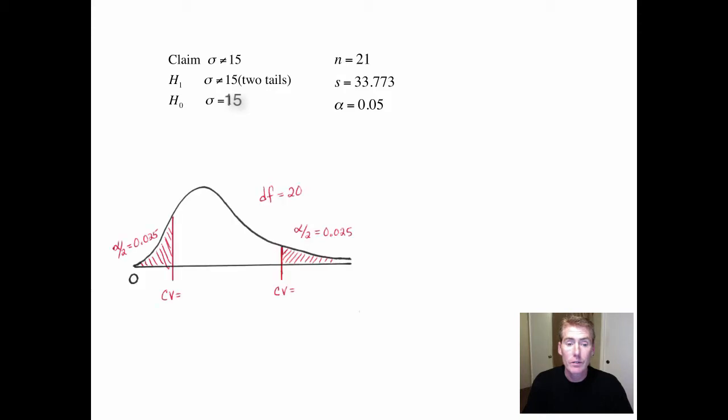So here's the sample data, and we're using alpha equals 0.05. So it's a two-tailed test. It would look like this. Degrees of freedom is n minus 1. Take the 0.05, cut it in half, so 2.5% on this side, 2.5% on this side.